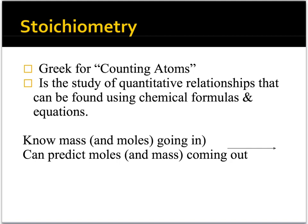The big picture here is: if we know the mass of a reactant going into a process, we can figure out how many moles are going in. We can use that information to predict how many moles of a product are going to come out, and we can convert moles to grams.